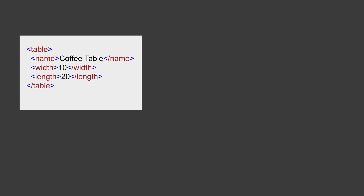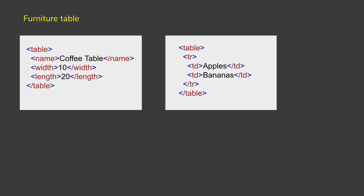Let us see this example. We have an XML where we have a table element, and inside the table element we have three more elements. With the information it is giving us, it looks like we are talking about a furniture table here. If you look at this other XML, again we have a table element and then we have elements like tr and td, which is for rows and columns, and it looks like here we are talking about an HTML table.